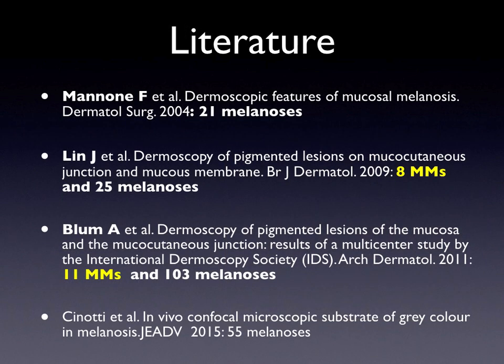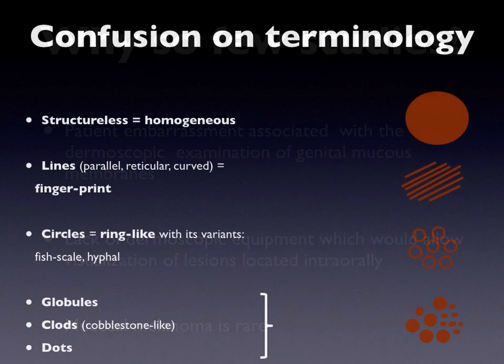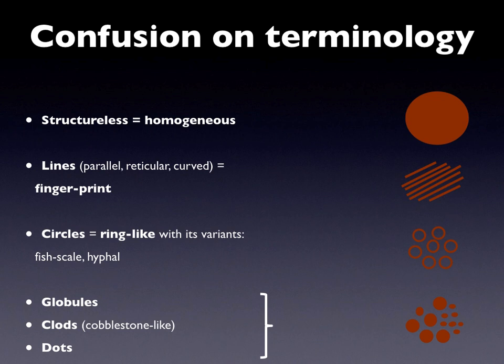Few studies have been conducted on the dermoscopic features of mucosal lesions, and they are mainly focused on the differential diagnosis between melanoma. In these studies, few cases of melanoma have been examined. There are three main reasons: patient embarrassment, lack of adequate dermoscopic equipment, and rarity of mucosal melanoma. There has also been a confusion in terminology in mucoscopy because different names indicate the same pattern.